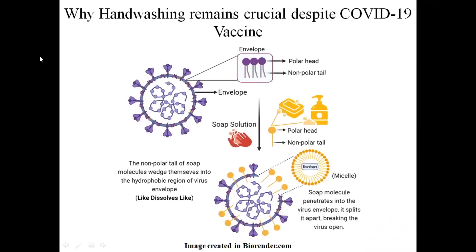Coronaviruses are envelope viruses in which several structural proteins like membrane, envelope, and spike proteins are anchored. The virus envelope consists of a polar head group and a non-polar, that is hydrophobic, tail.